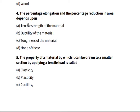Number four: the percentage elongation and the percentage reduction in area depends upon. We have tensile strength of the material, ductility of material, toughness of material, and none of these. We know that the percentage elongation depends on the ductility of the material.